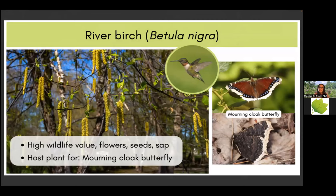I was very happy to learn that we have river birch this year. River birch has really high wildlife value — both through its flowers, seeds, and sap. They support hummingbirds as well. It's the host plant for the mourning cloak butterfly. One interesting fact about the mourning cloak butterfly is that it is one of the very few butterflies that overwinters as an adult. It just falls to the ground and hides among the leaves, emerging as a fully grown butterfly in early spring days.